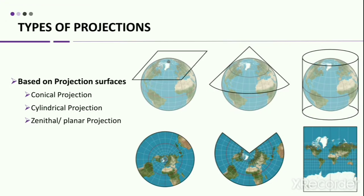Based on projectional surfaces, projections are grouped as conical projection, cylindrical projection, and zenithal projection. Conical projection uses a cone placed over a globe as the developable surface. Cylindrical projection uses a cylinder as the developable surface placed over the globe — the Mercator projection is the most common type of cylindrical projection. Zenithal or planar projection projects map data onto a flat surface touching the globe. In each category there are several types of projections, and ArcInfo supports 46 types of projections.